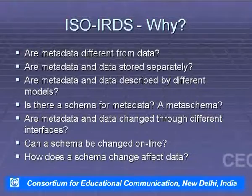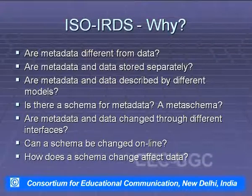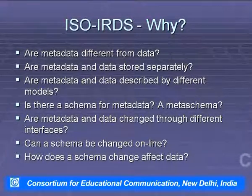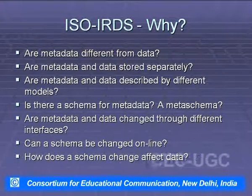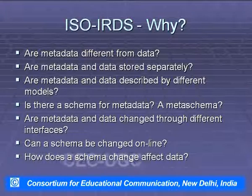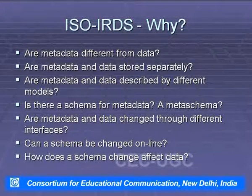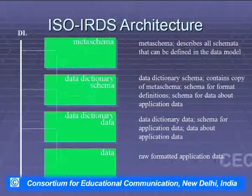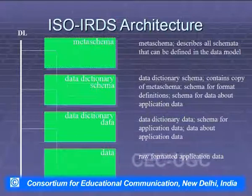ISO IRDS raises key questions: Are metadata different from data? Are metadata and data stored separately? Are they described by different models? Is there a schema for metadata — a meta-schema? Are they changed through different interfaces? Can a schema be changed online, and how does a schema change affect data? The ISO IRDS architecture defines: meta-schema, data dictionary schema, data dictionary data, and data.